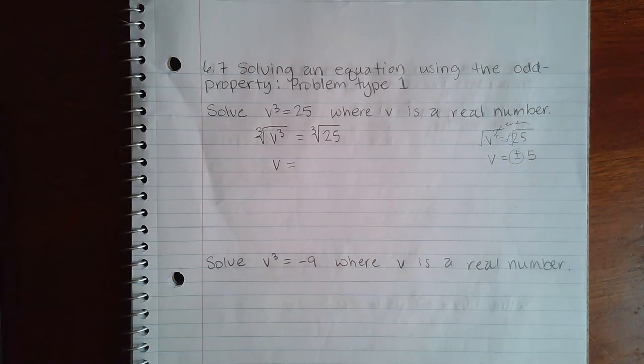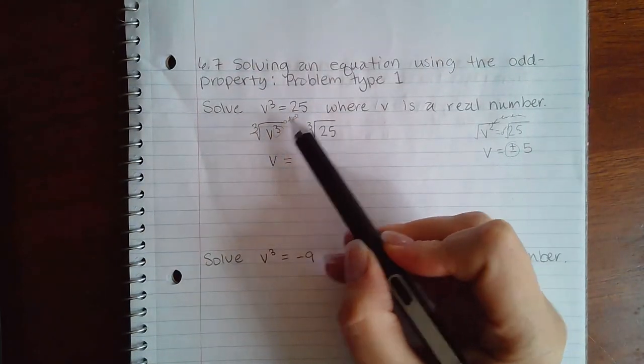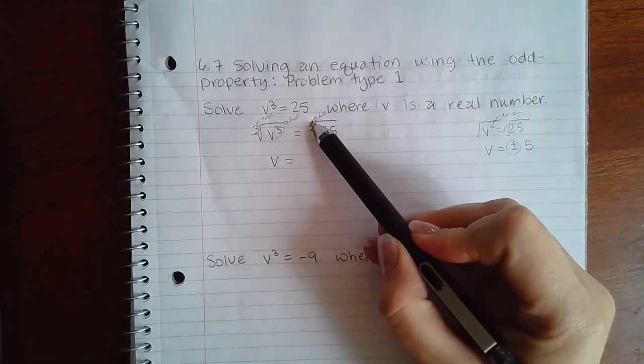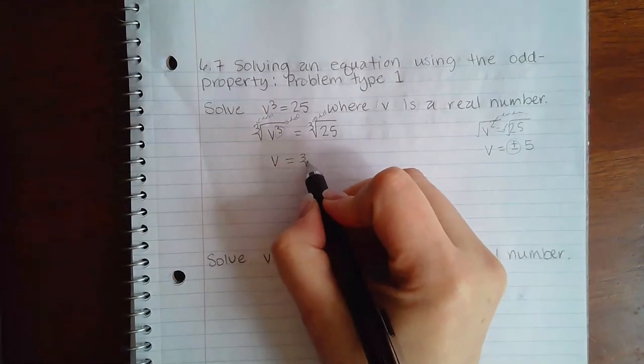However, with the odd property, when this is odd and you take an odd index, right here, this is an odd index, then you do not need the plus or minus. So we just end up with the cube root of 25.